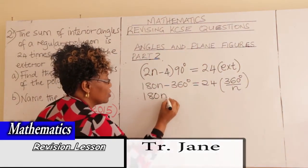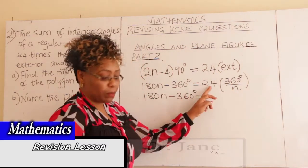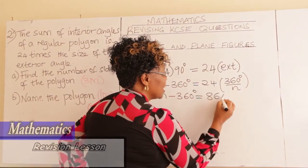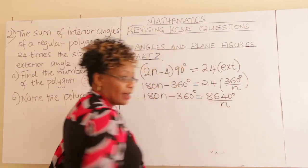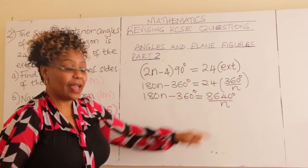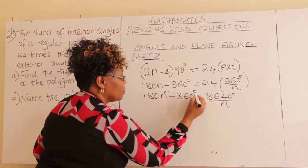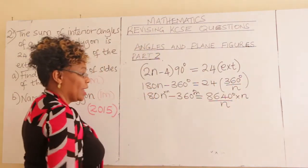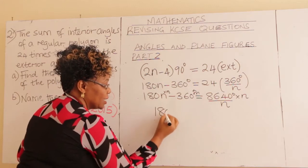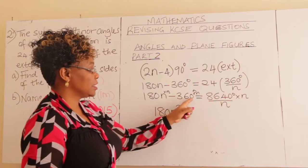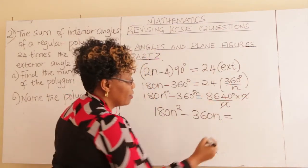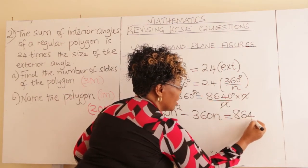Multiplying out: 180n − 360 = 8640/n. Multiply every term by n to remove the denominator: 180n² − 360n = 8640.